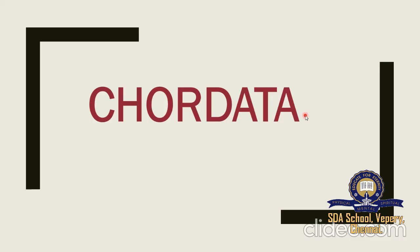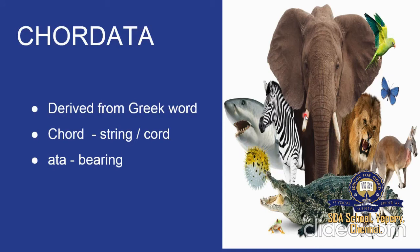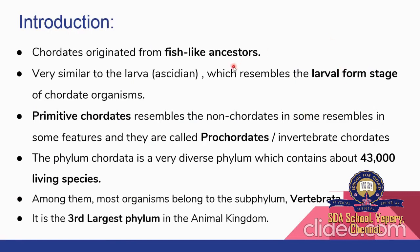Now we move into a new topic — Chordata. Chordates are characterized by the presence of a notochord, dorsal nerve cord, and paired gill slits. The word 'Chordata' is derived from the Greek word 'chord' meaning a string, and 'erta' meaning bearing — so 'string bearing.' Chordates originated from fish-like ancestors. Primitive chordates resemble non-chordates and are called prochordates or invertebrate chordates. The phylum Chordata contains about 43,000 living species, most belonging to the subphylum Vertebrata. It is the third largest phylum in the animal kingdom.